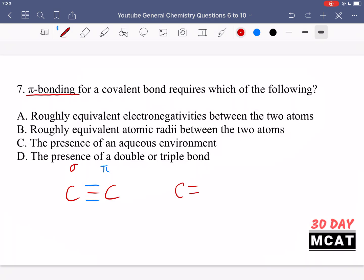Option B is saying roughly equivalent atomic radii between the two atoms. No, the radii can be pretty different, just like the electronegativities can. Option C is saying the presence of an aqueous environment. Nope. There are many organic compounds that can have additional bonds, meaning pi bonds. And finally, option D is correct. It's saying the presence of a double or a triple bond. Yes, that's pretty much the definition of a pi bond. It's an additional bond on top of a sigma bond, which means a double bond or a triple bond.